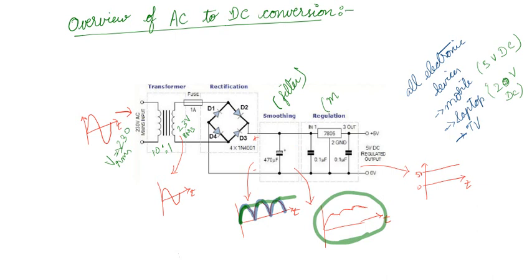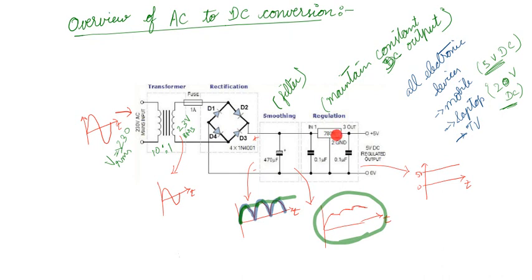Then I will use a regulator circuit, which is used to maintain constant DC output. Why is it necessary? Because our electronic devices need a constant voltage — for a mobile phone we need 5 volts, for a laptop I need 20 volts for charging. Regulation can be attained using an IC — for example IC 7805, which will give 5 volts output whatever the input voltage is, as long as it is greater than 5 volts. Or I can use a zener diode circuit. So this entire thing — transformer, rectifier, filter, and regulator — will be in your charger or adapter. This is our overview of AC to DC conversion.